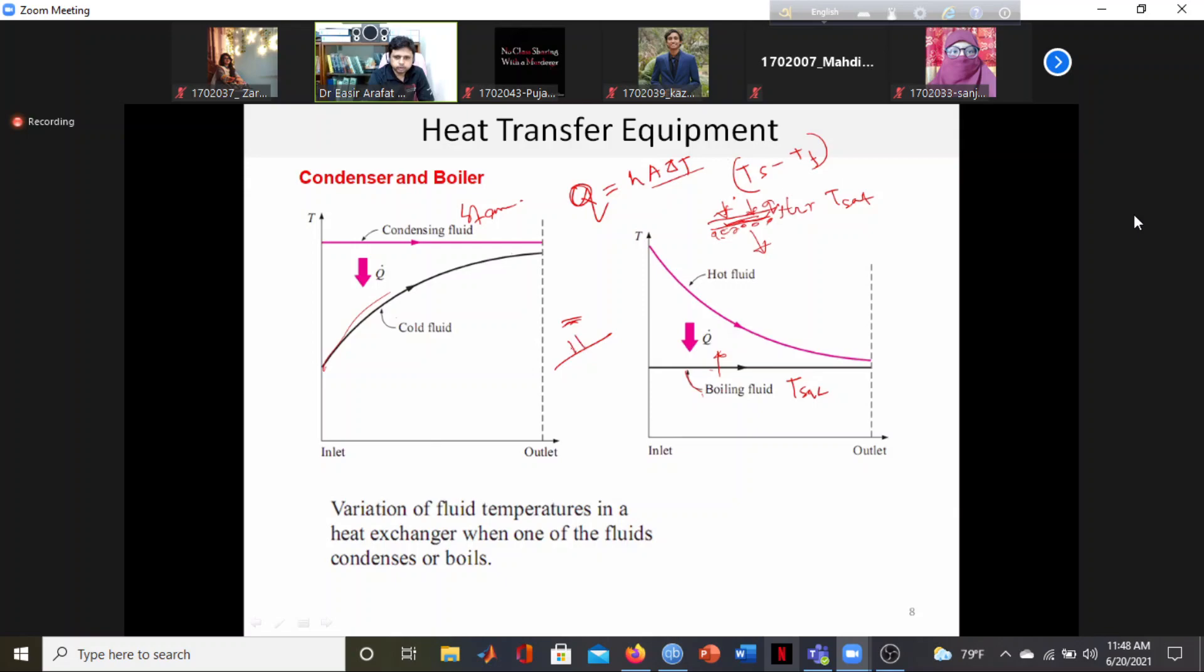To calculate the overall heat transfer coefficient, we use U times delta T along the heat transfer direction in the x direction. The delta T is very small and varies along the length, from delta T1 to delta T2.